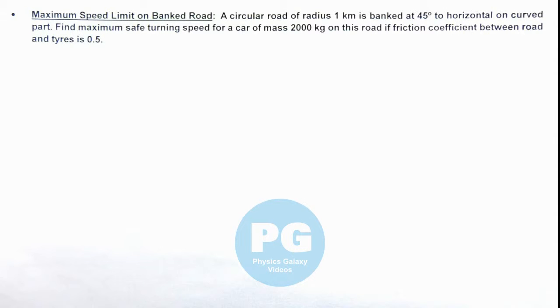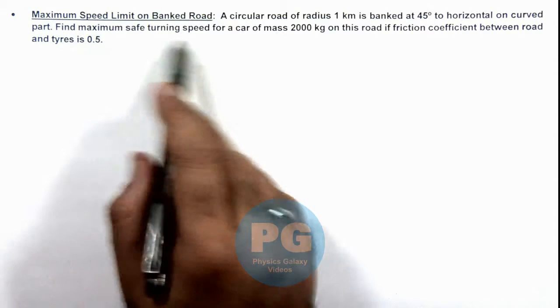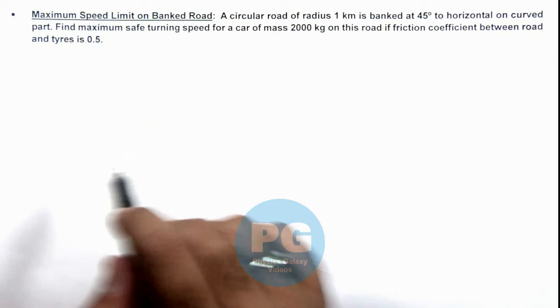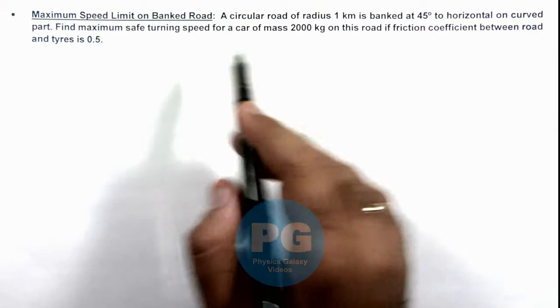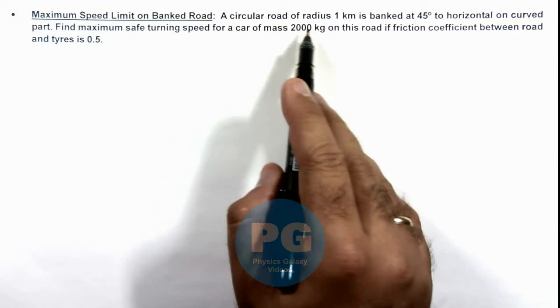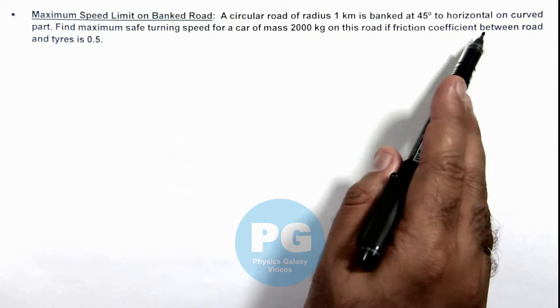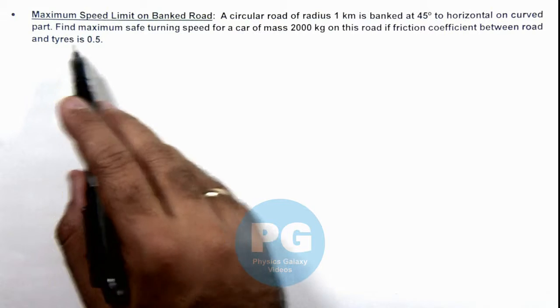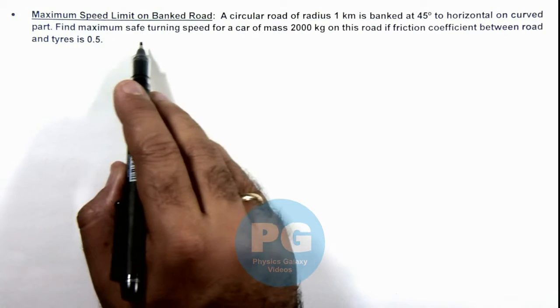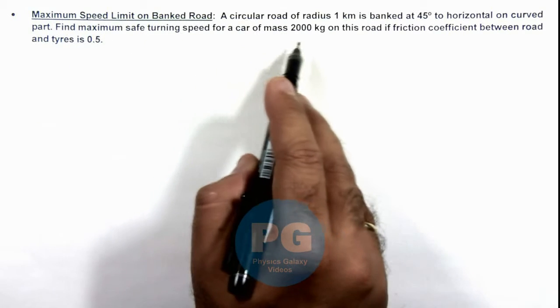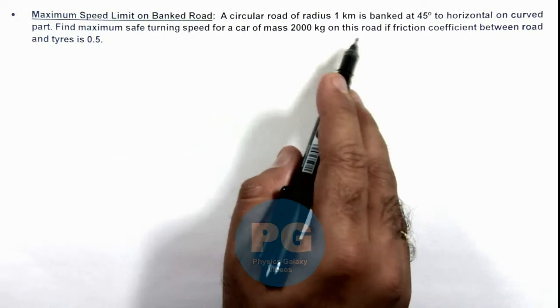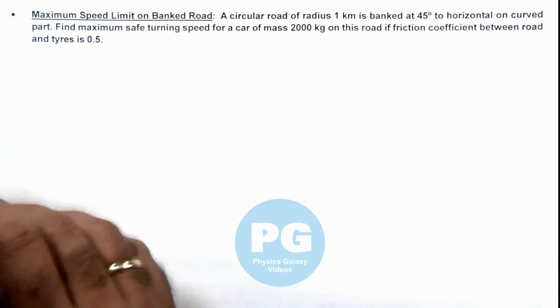In this illustration we'll discuss the maximum speed limit on banked road for an automobile. Here we are given that a circular road of radius 1 kilometer is banked at 45 degree to the horizontal on curved path. We are required to find maximum safe turning speed for a car of mass 2000 kilogram on this road if friction coefficient is 0.5.